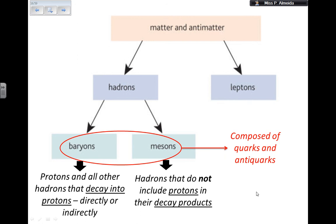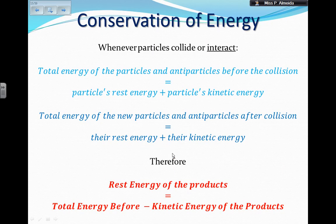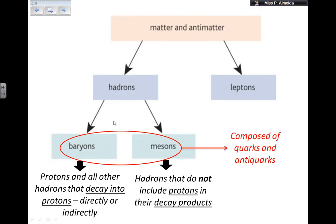So to summarize: particles and antiparticles are divided into hadrons — for strong interactions — and leptons — for weak interactions. Leptons are light: electrons, muons, neutrinos; they can also undergo electromagnetic interaction if charged. Hadrons are heavy: protons, neutrons, and mesons such as pi and k; they undergo strong interaction and electromagnetic interaction if charged. Apart from the stable proton, all hadrons decay through the weak interaction. Interactions must conserve energy, and hadrons can be further divided into baryons and mesons.